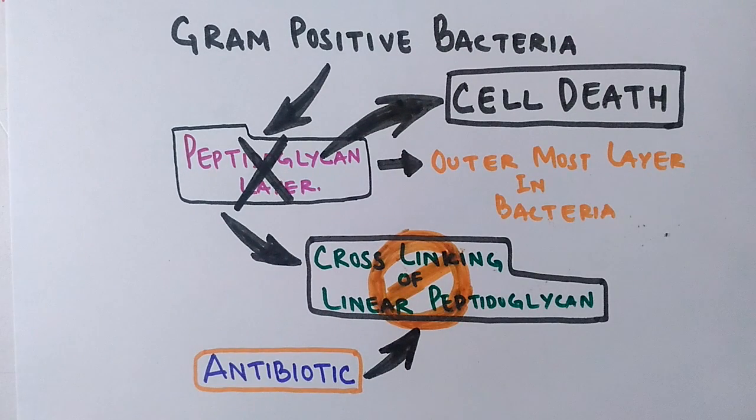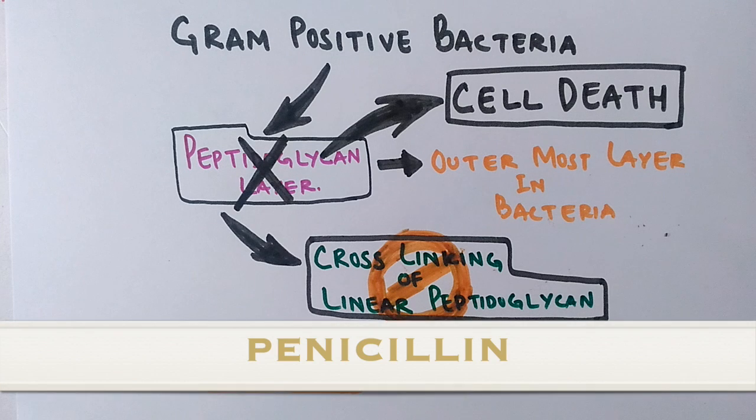The antibiotics which cause inhibition of cell wall synthesis include a group of antibiotics called penicillin drugs that include amoxicillin, beta-lactam antibiotics, and many others.